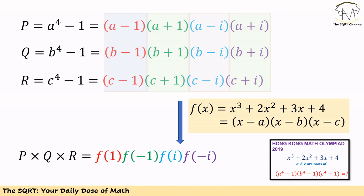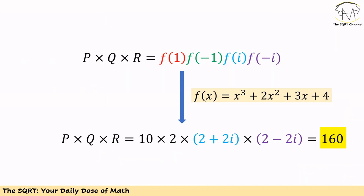We can use the same idea and write (a minus i)(b minus i)(c minus i) as f(i), and finally (a plus i)(b plus i)(c plus i) as f(minus i). So clearly p times q times r equals f(1) times f(minus 1) times f(i) times f(minus i). We have f(x) as x cubed plus 2x squared plus 3x plus 4, and evaluating these four values gives us the final answer of 160.